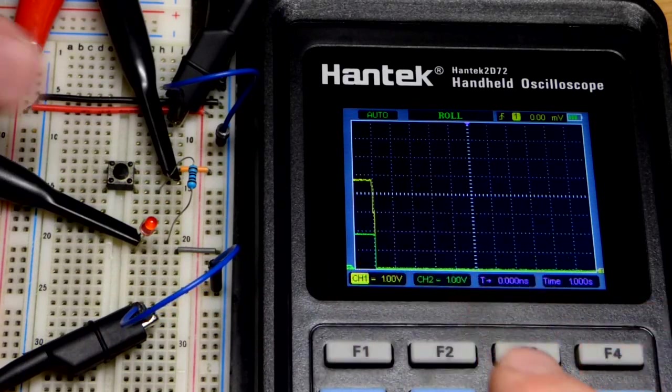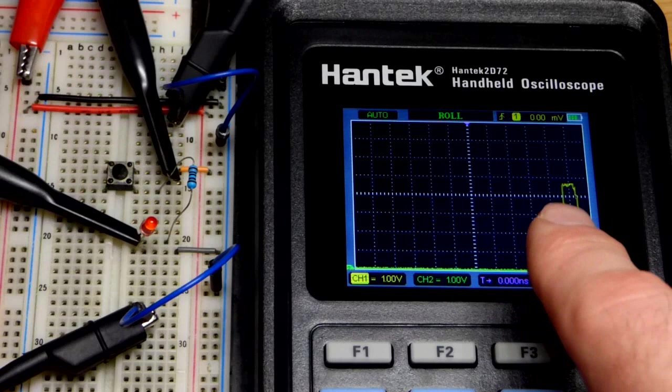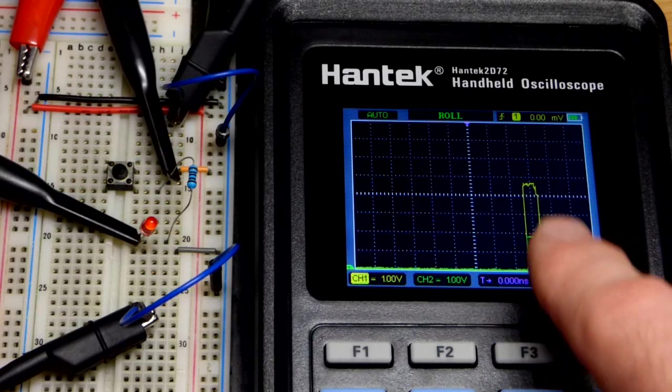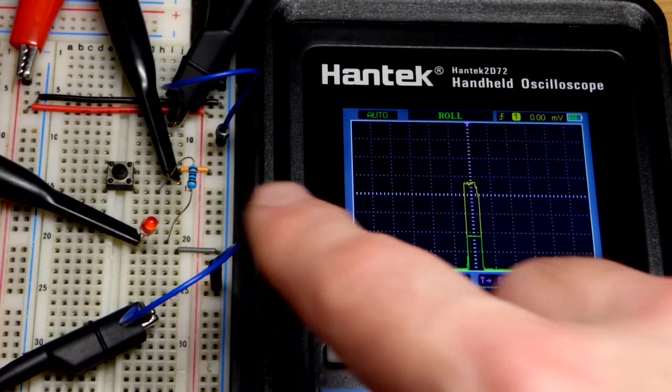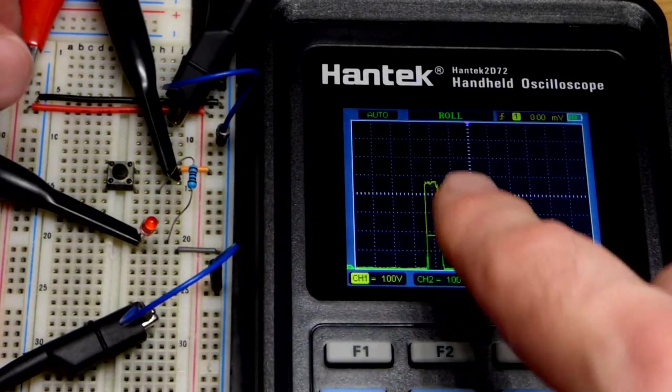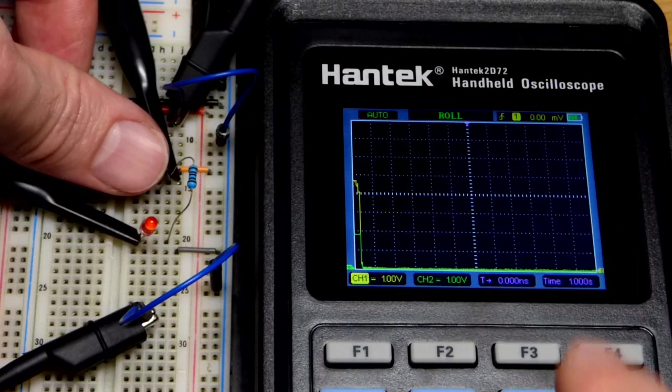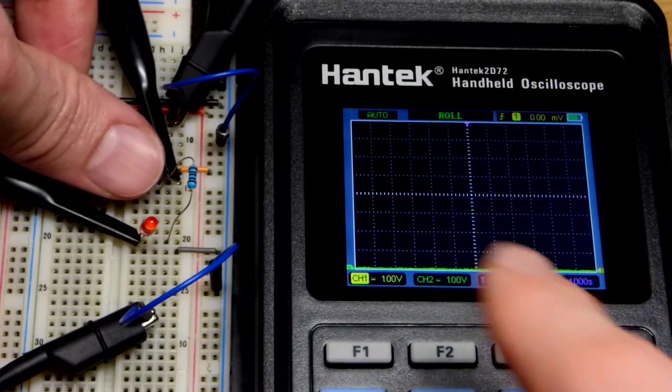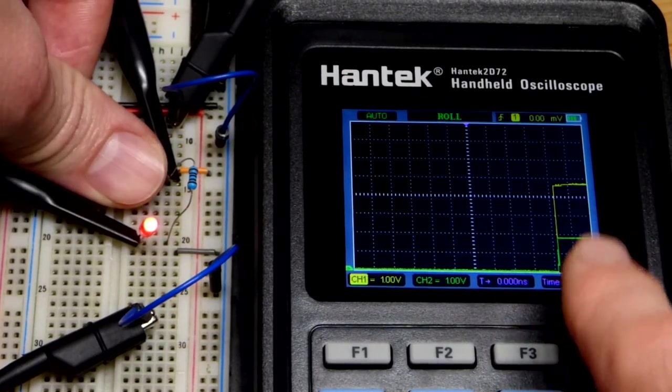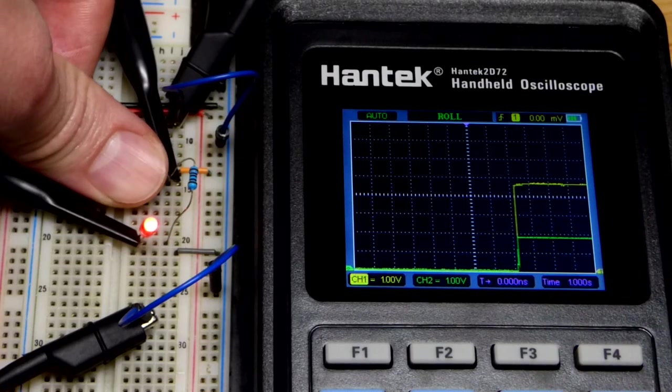We also have the voltage across the resistor, which is the voltage difference between the LED and the supply voltage of five volts. You can see we're going up five squares - each square is one volt, and each square moving across is one second.